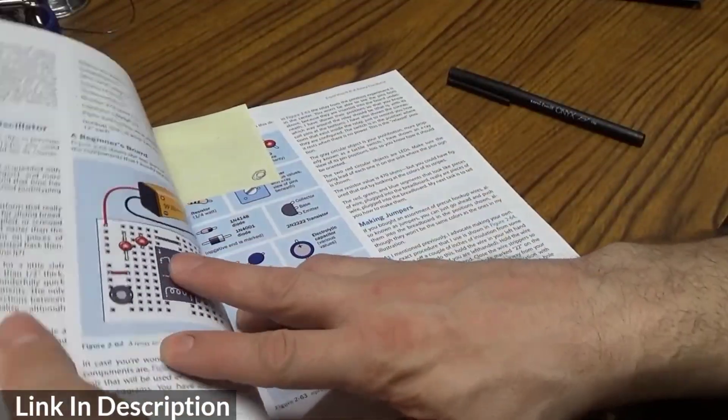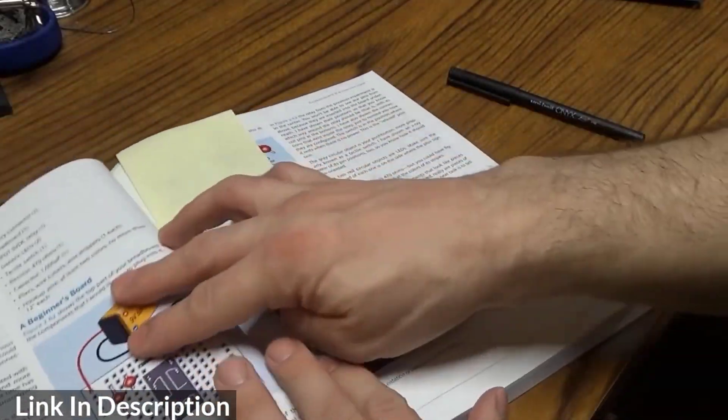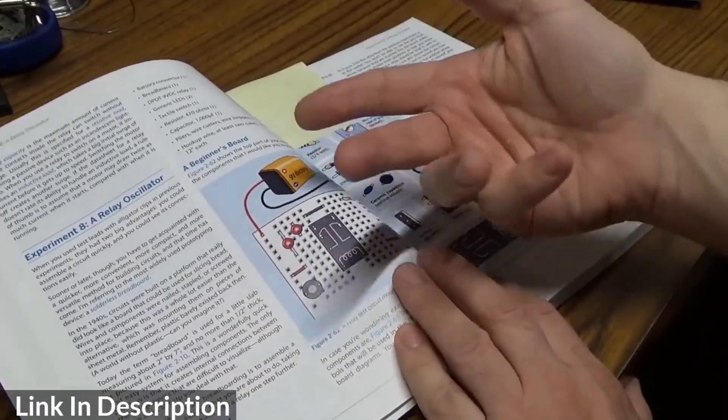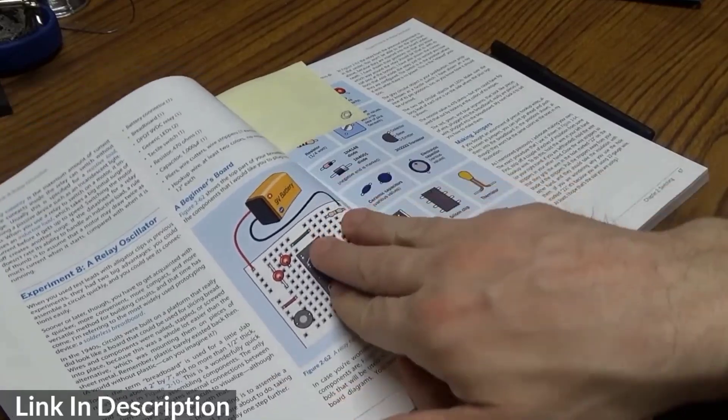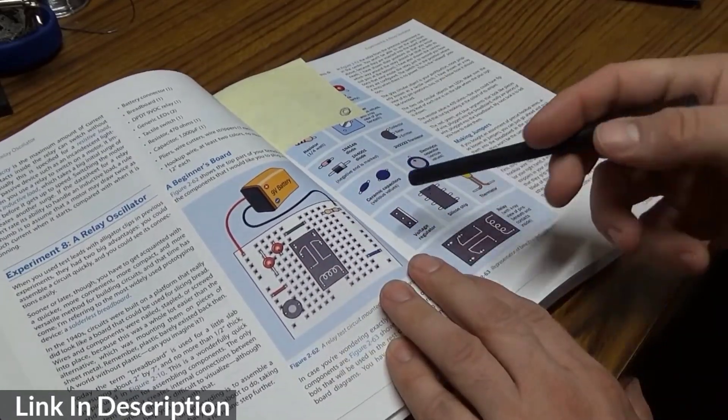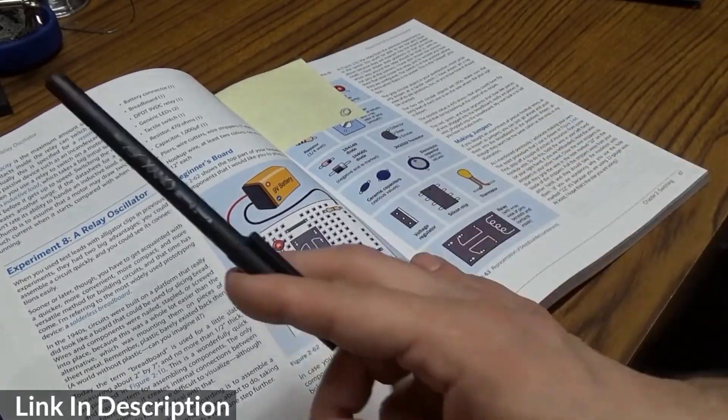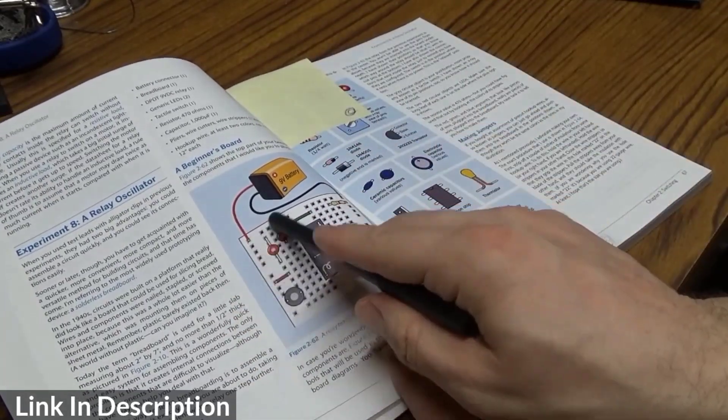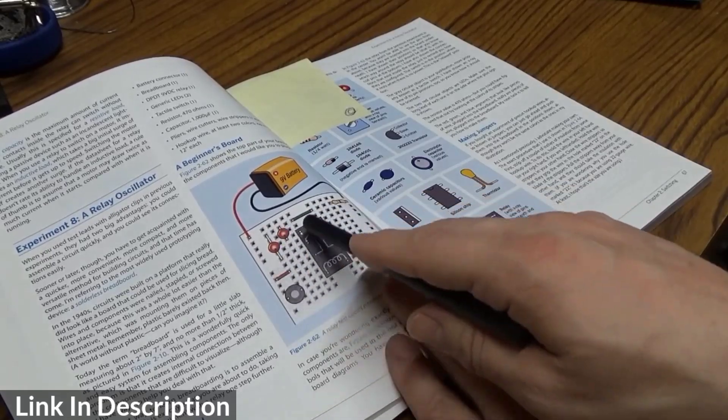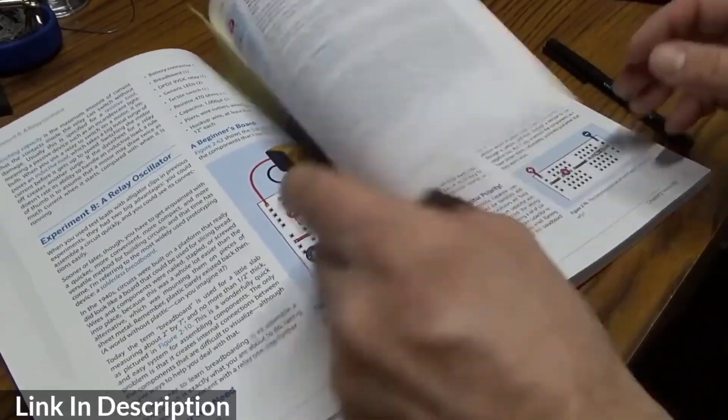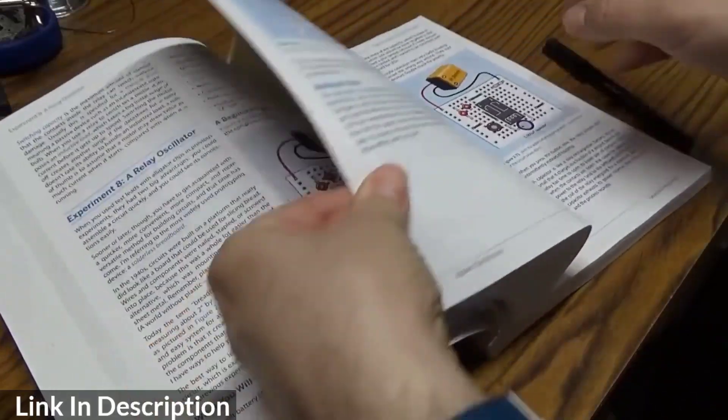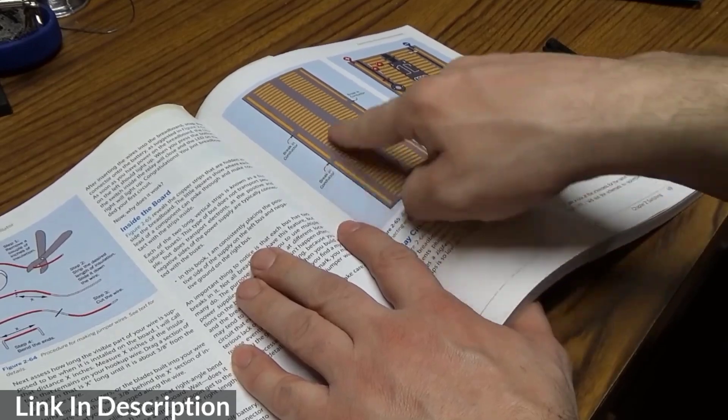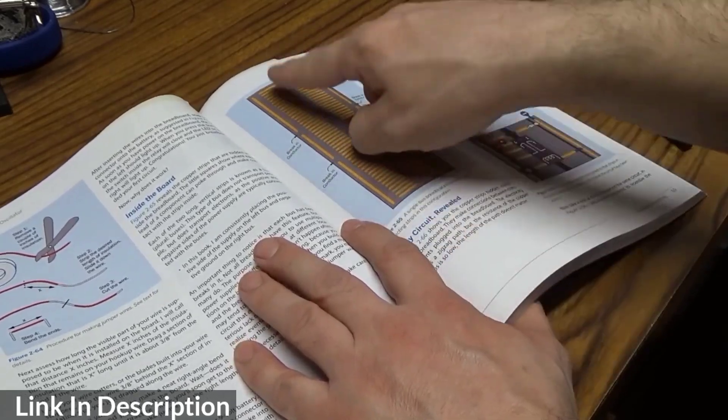In each of these experiments, they give a really good description of why you're doing it, the type of parts you're using, and how to read the diagrams. For instance, this experiment talks about what a breadboard is, how a breadboard is set up, and why it works. It shows how the various rows are wired together.